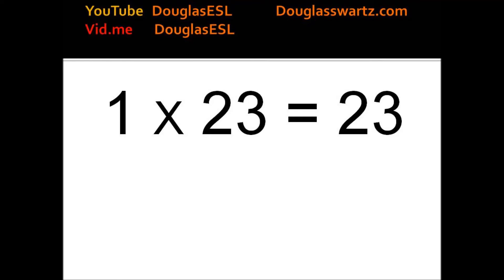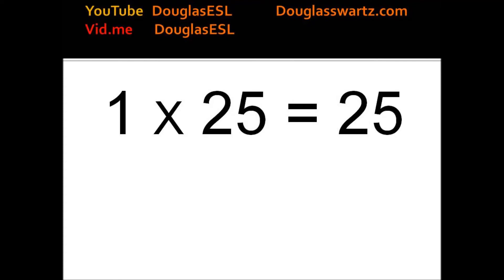1 times 23 equals 23. 1 times 24 equals 24. 1 times 25 equals 25.